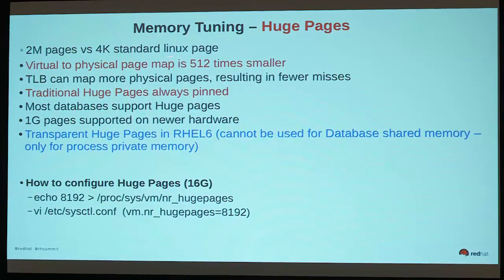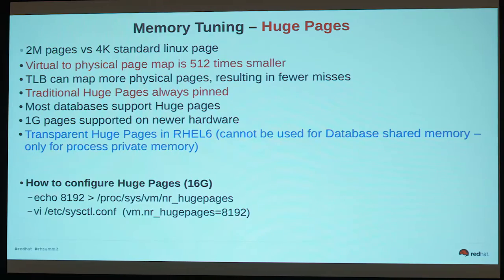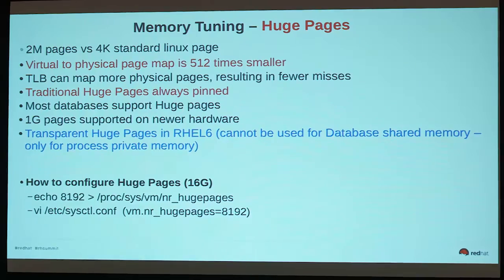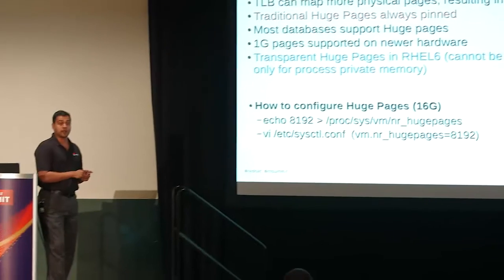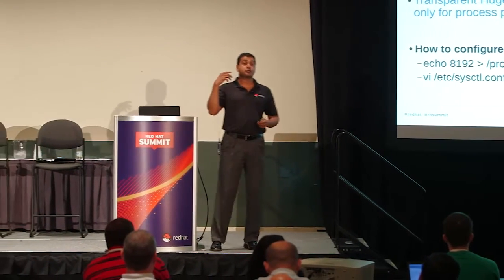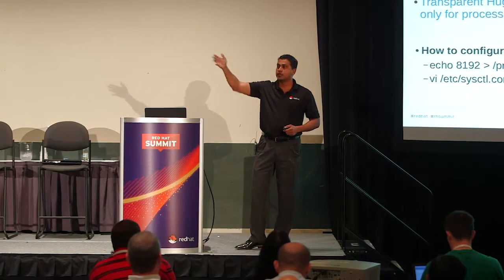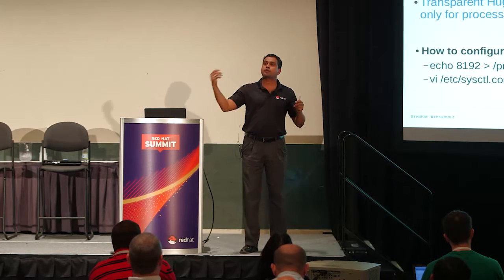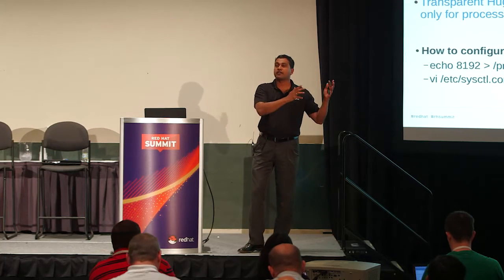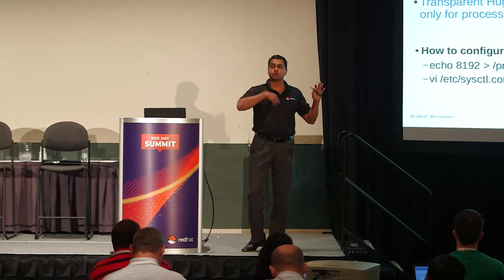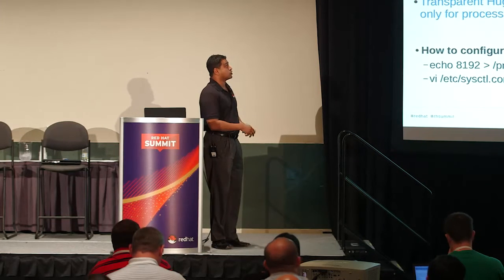Huge pages: you cannot use transparent huge pages for databases because databases use System V shared memory, so you must set up traditional huge pages. The advantages are that instead of using a 4 KB page, we use a 2 MB page, so the page table is 500 times smaller and page lookups are far more efficient. Traditional huge pages are always pinned — AutoNUMA doesn't affect them and they never get swapped. If you're running Sybase, DB2, or Oracle with huge pages, that shared memory segment will always stay pinned in memory, so users can continue to access it without any drop in performance. That's one really compelling reason to use huge pages.